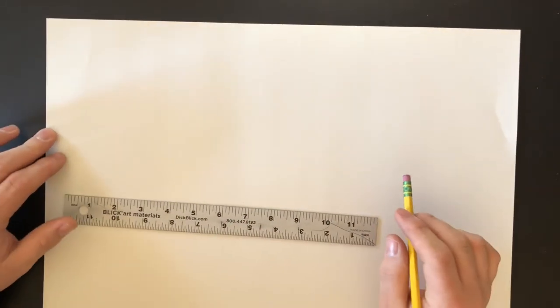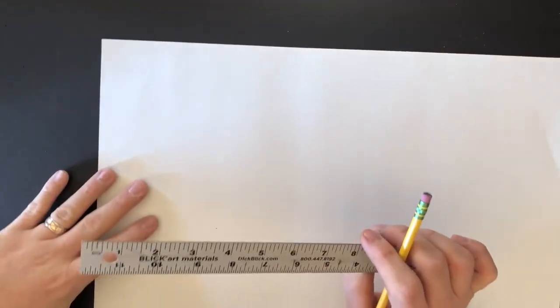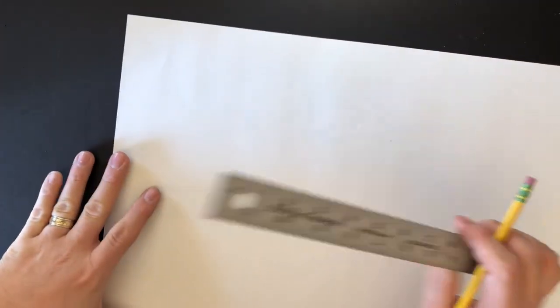Alright, so this is just to show you how to make a two-inch grid. This is a 12 by 18 piece of paper, but it doesn't matter what size paper you have. It all works the same way.